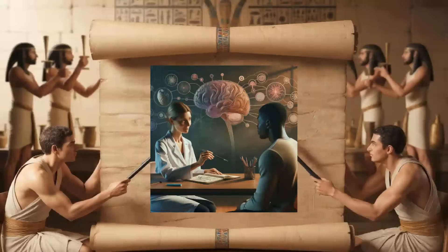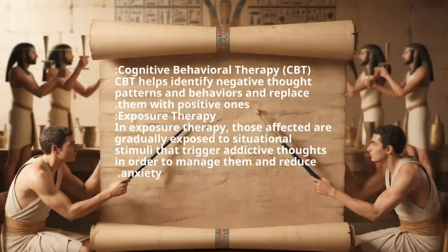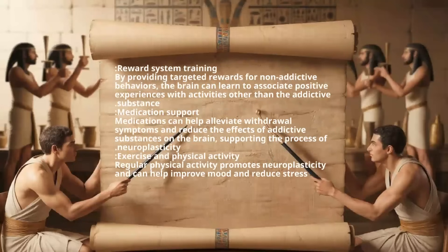How neuroplasticity is used in therapy: Cognitive Behavioral Therapy (CBT) helps identify negative thought patterns and behaviors and replace them with positive ones. In Exposure Therapy, those affected are gradually exposed to situational stimuli that trigger addictive thoughts in order to manage them and reduce anxiety. Reward system training provides targeted rewards for non-addictive behaviors, helping the brain associate positive experiences with activities other than the addictive substance. Medications can help alleviate withdrawal symptoms and reduce the effects of addictive substances on the brain, supporting the process of neuroplasticity. Regular physical activity promotes neuroplasticity and can help improve mood and reduce stress.